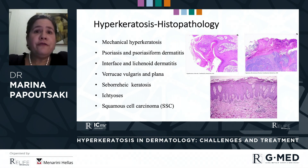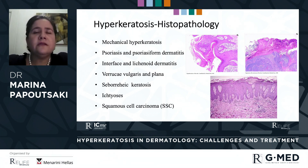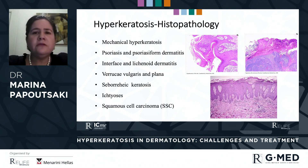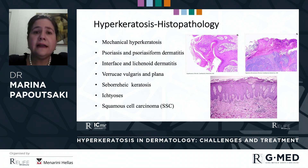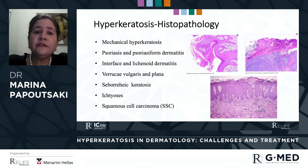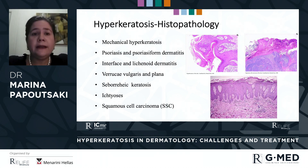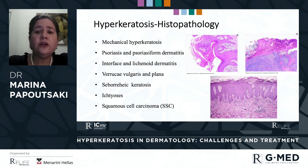Histopathology varies according to the cause of hyperkeratosis. We see different histopathology if it is mechanical hyperkeratosis, psoriasis and psoriasiform dermatitis, interface and lichenoid dermatitis, verruca vulgaris and plana, seborrheic keratosis, ichthyosis, and squamous cell carcinoma.